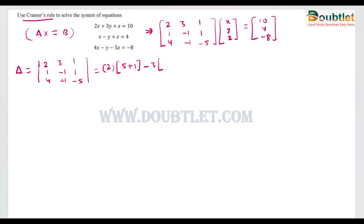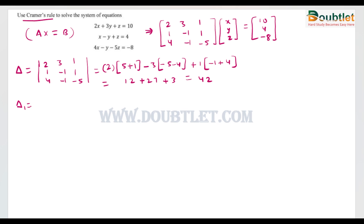Solving this determinant by expanding along the first row: 2×(5+1) − 3×(−5−4) + 1×(−1+4). This gives 2×6 = 12, then −3×(−9) = 27, then 1×3 = 3. So delta = 12 + 27 + 3 = 42.